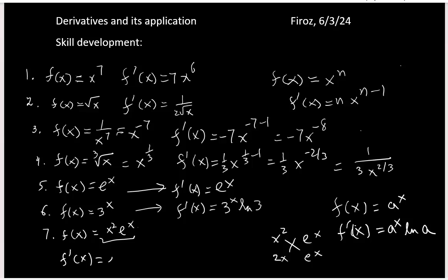So in this case, f prime x will give you x squared e to the x plus 2x e to the x. If you want to do some simplification, you can write e to the x as a common factor.